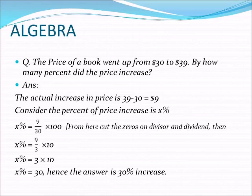Next, we have to find out: this 9 is how much percentage of the base value, that is 30. Consider the percentage of price increase is x percent. Then x percent is equal to the difference of increase divided by the base value, into 100 — that means 9 divided by 30, into 100.